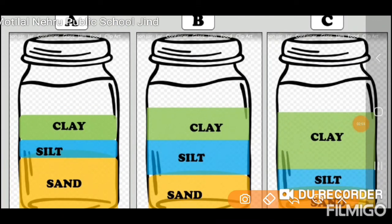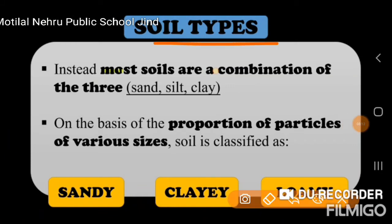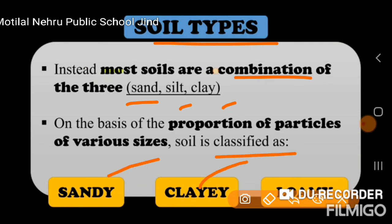We have layers a, b, c — clay soil, silt, sand, and different types of soil. The combination of the three — sand, silt, and clay — on the basis of the proportion of particles, the various types of soil are classified as sandy soil, clay soil, and loamy soil.